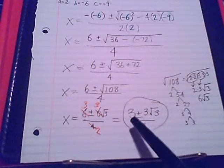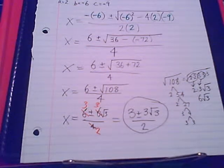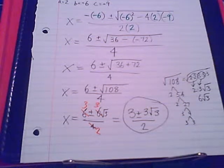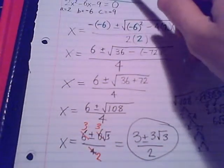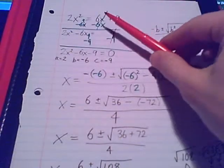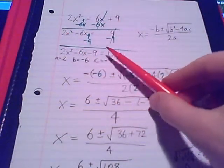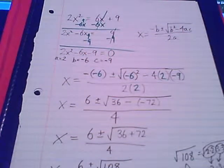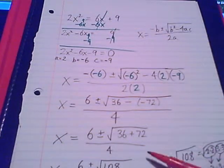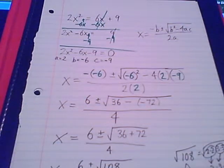That simplifies to 3 plus or minus 3 radical 3 over 2. We know this represents two distinct answers: one is 3 plus 3 radical 3 over 2, and the other is 3 minus 3 radical 3 over 2. To summarize: you must start by putting the equation in standard form, accurately find a, b, and c, plug into the quadratic formula, simplify the radical, and simplify the fraction.